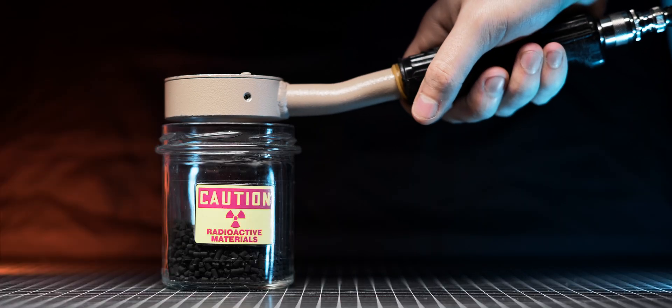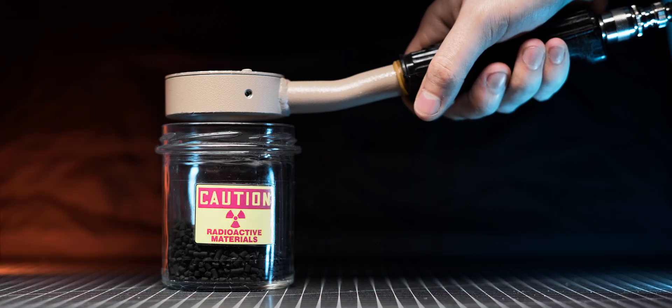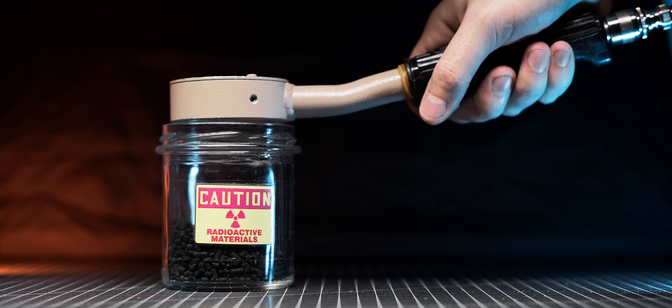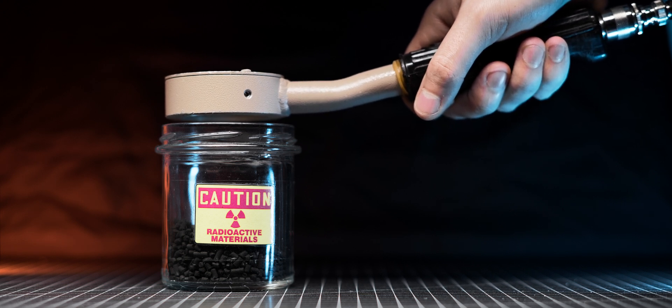When the lid of the jar is removed, the active carbon pellets read about 500 counts per minute on my Ludlum Model 3 with a 44-9 probe when measured just above the open jar.